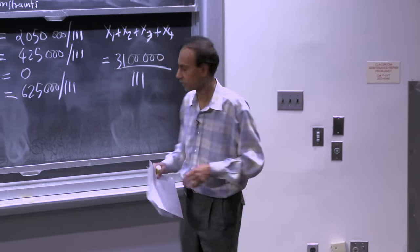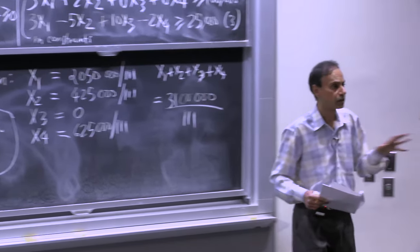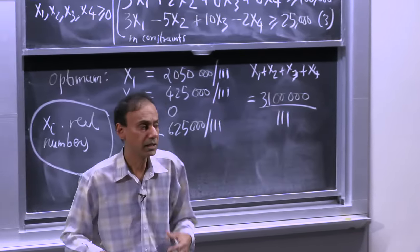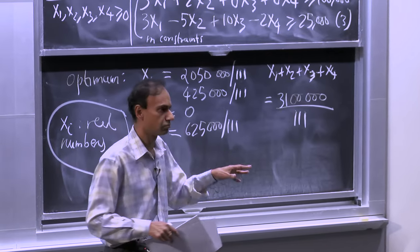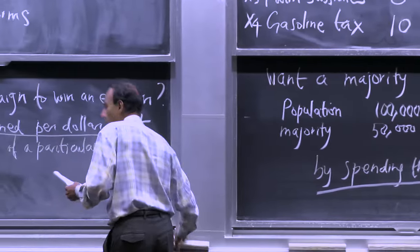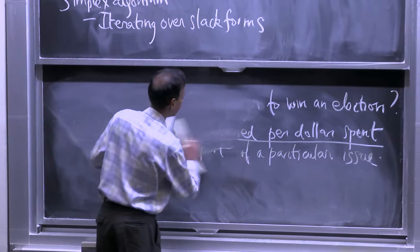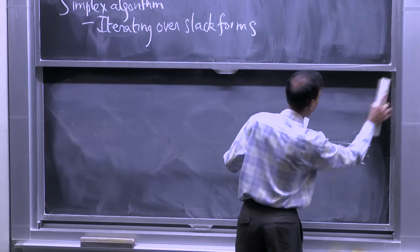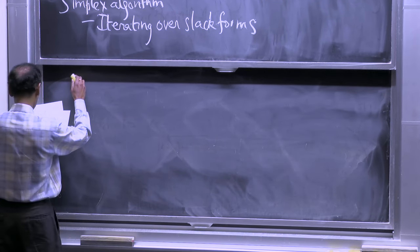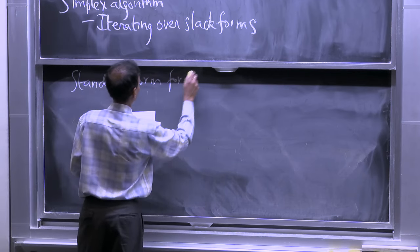We won't talk about integer linear programming anymore for the rest of this lecture. What I want to do before describing an algorithm is give you the general formulation of a linear program — called the standard form in CLRS, also called the general form.